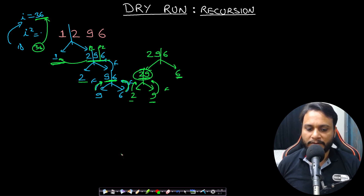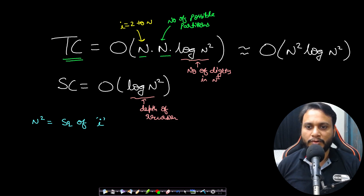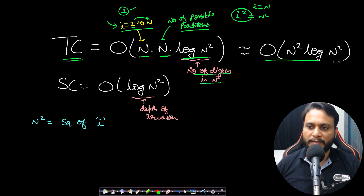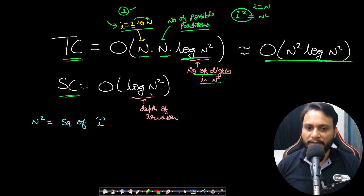The time complexity is O(n · n · log(n²)) = O(n² log n), where the outer n is the loop over i from 1 to n, the middle n is for all partition points per number, and log(n²) is the number of digits in i². Note: i=1 always satisfies the constraint so we can start the loop from 2. Space complexity is O(log(n²)) due to the recursion call stack depth, which is the number of digits in n².